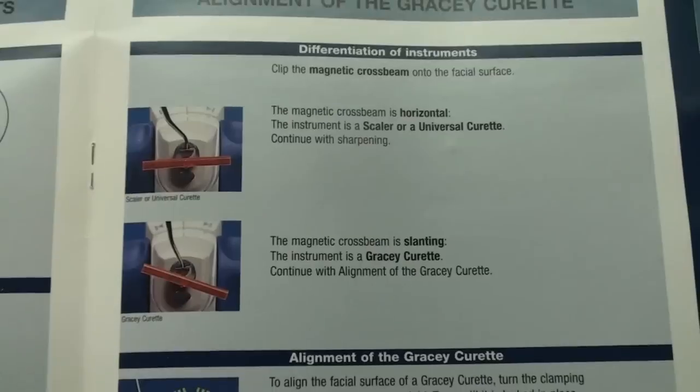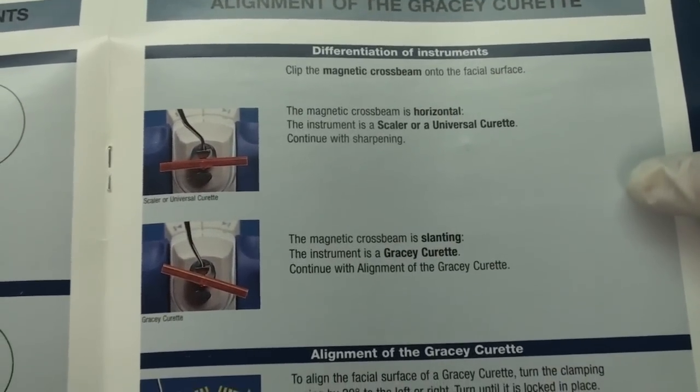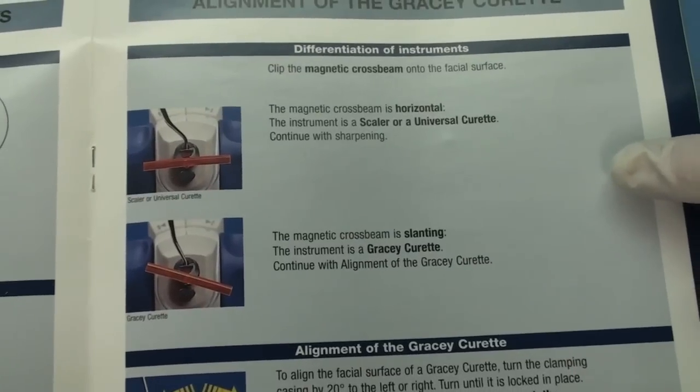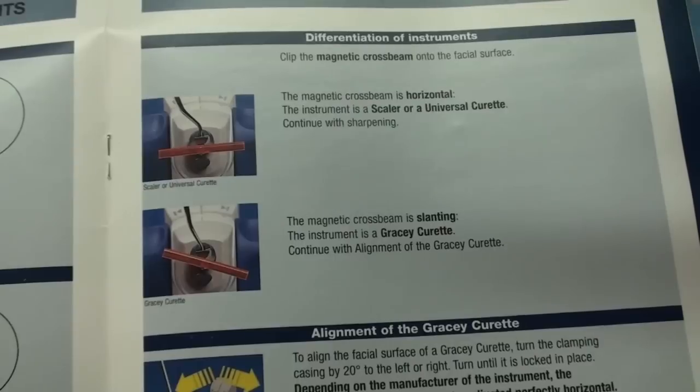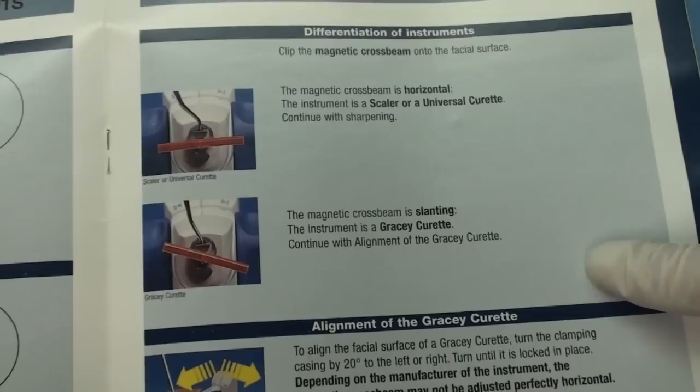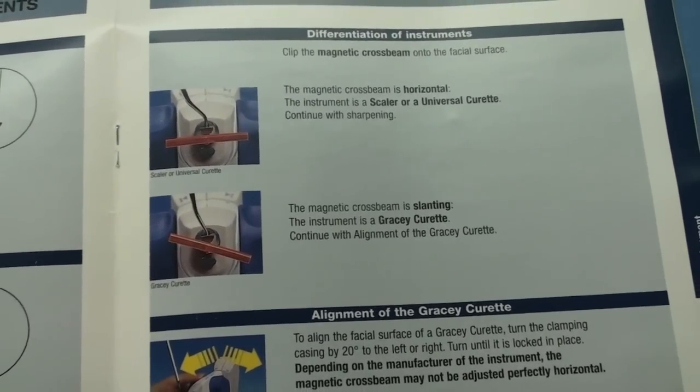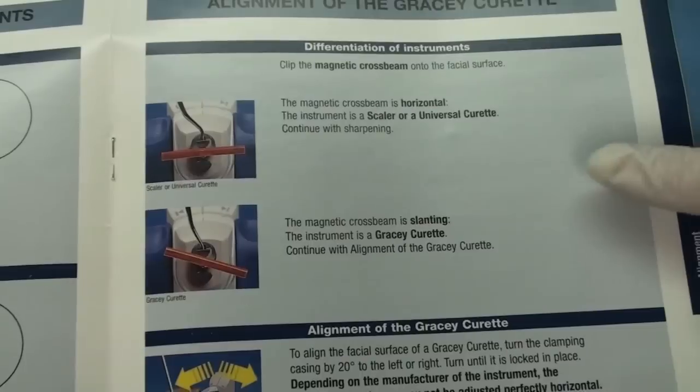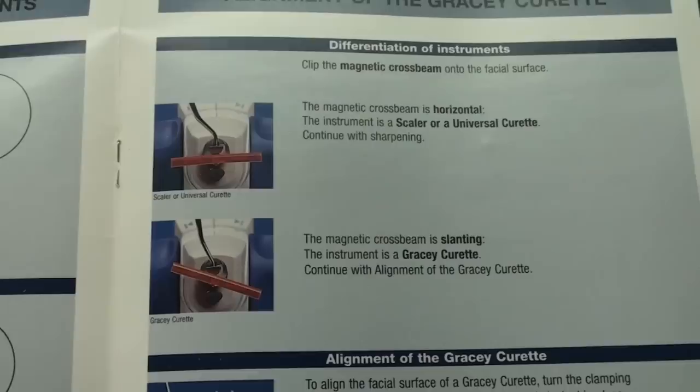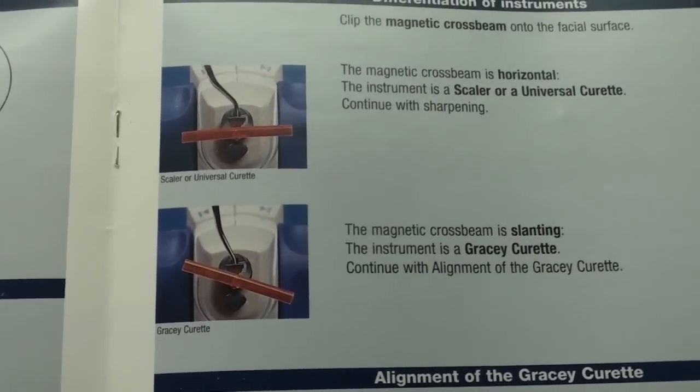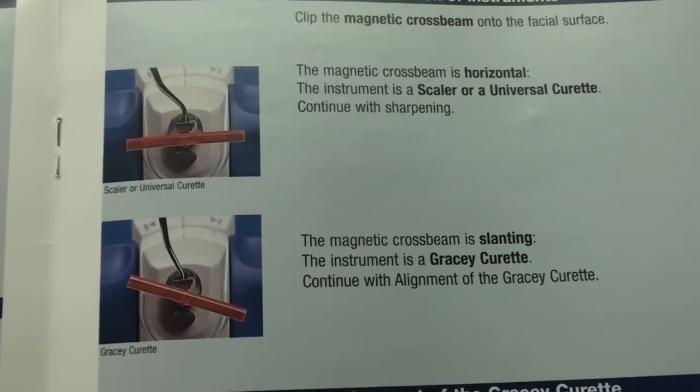Using the red magnet stick, it will show you which side of the instrument needs to be sharpened. We have the scalers or a universal curette where the red bar will be straight. And then when you get to your Gracey curettes, it will slant to which side the cutting edge is on. So that's a valuable tool because this way you could even have an assistant do this for you. Most of us hygienists all know which side is the cutting edge, so we don't really need this. But this is great for your hygiene assistants who can actually do the sharpening for you.